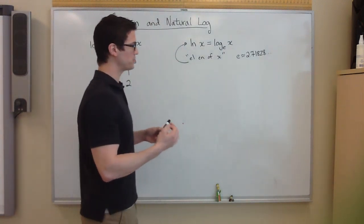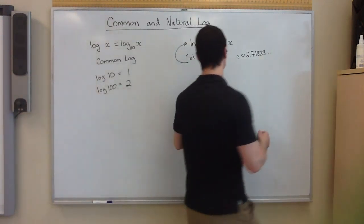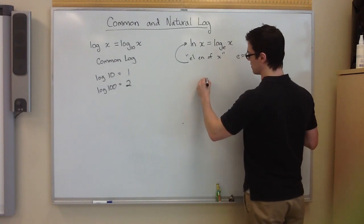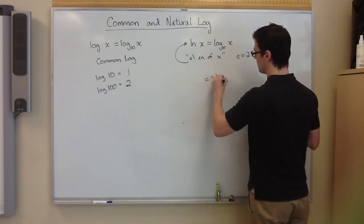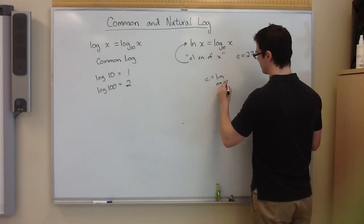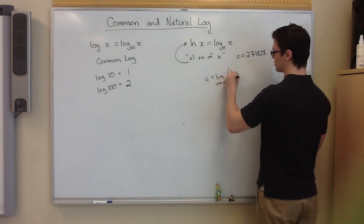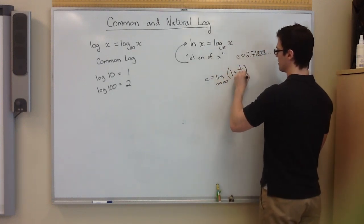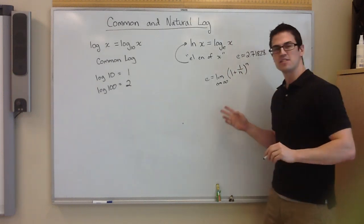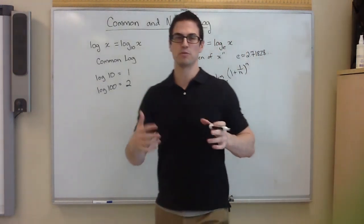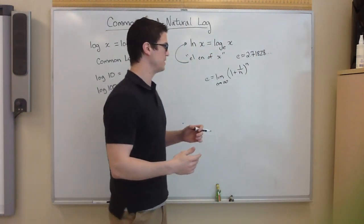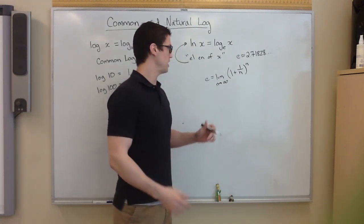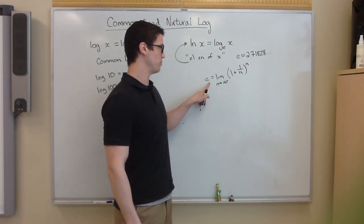So basically what it is, it's a special base. And what e is equal to, if you remember limits, it's the limit as n goes to infinity of 1 over n to the n power. This is important when you're continuously compounding interest on certain loans and such. This is where e comes into more importance.